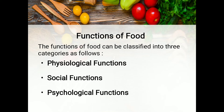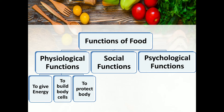Functions of food can be classified into three categories. बच्चो, भोजन हमारे शरीर में तीन तरह के कार्य करता है। First category includes physiological functions, second category is social functions, and third category is psychological functions — यानि की शारीरिक, सामाजिक एवं मनोवैज्ञानिक कार्य।